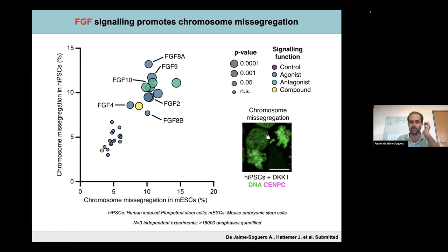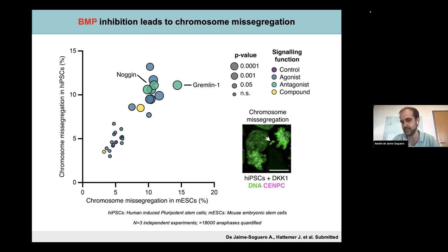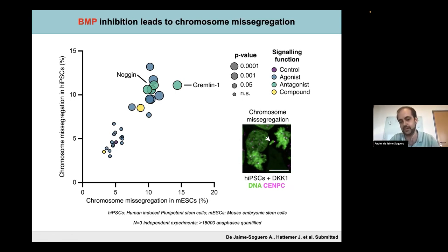Also, many members of the FGF ligand family seem to have a conserved role in this aspect, and were also triggering high levels of chromosome instability, as well as endogenous inhibition of BMP signaling through Noggin or Gremlin. This was puzzling for us, because we are not using an inhibitor of a checkpoint protein of the cell cycle to induce chromosome instability. We are using morphogens that are actually orchestrating and directing embryo patterning and development — and why some of these morphogens would have a negative impact in this aspect was an interesting question we wanted to answer.